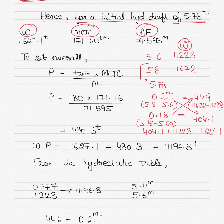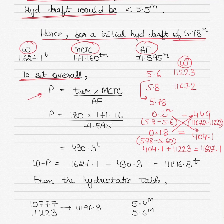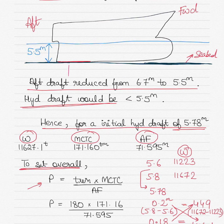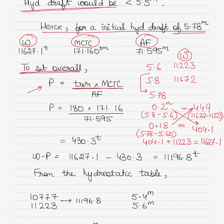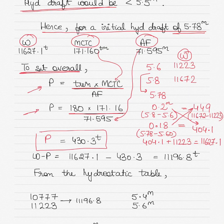For the vessel to sit on the seabed, P — the upward thrust from the seabed — must be calculated. P equals trim multiplied by MCTC divided by AF. Using the known values of trim, MCTC, and AF, P comes out to 430.3 tonnes.